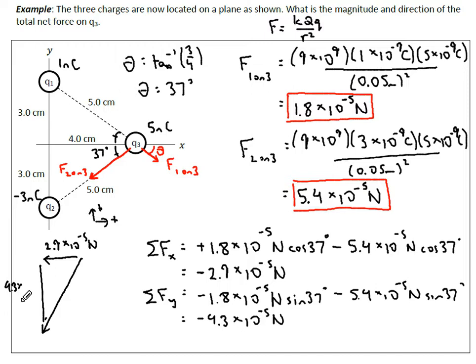We need to find out what is our theta and our overall resultant. We do a squared plus b squared equals c squared, so 2.9 squared plus 4.3 squared, square root. We end up with 5.2 times 10 to the negative 5 Newtons.